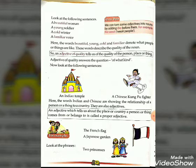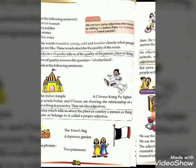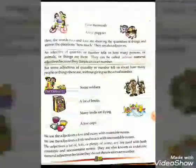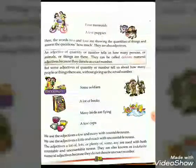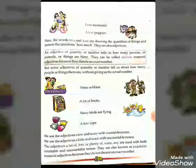For example, look at the phrases given here: 'the French flag,' 'a Japanese garden,' 'two princesses,' 'four mermaids,' 'a few puppies.' Here the words two and four are showing the quantities of things and answer the question 'how many?' — they are also adjectives.